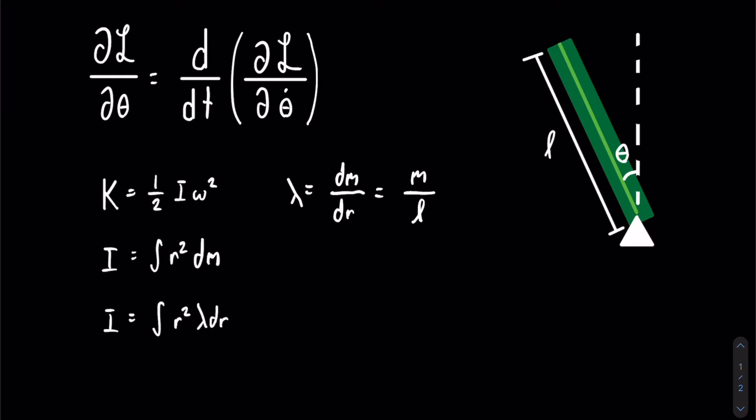This integral is taken from 0, where the pin joint is, all the way up to length L. Now, we can evaluate this integral. We take out lambda, because it's just a constant, and we're left with the integral from 0 to L of r squared dr. Then we apply the power rule, where we raise the power by 1 and divide it by that power.